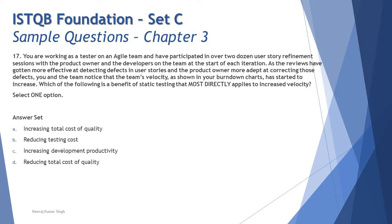The question asks: which of the following is a benefit of testing that most directly applies to increased velocity? You might notice that many terms here — story refinement session, velocity, burn down charts — are not in the foundation syllabus. However, the question is not asking you to define these terms; it's using them as context. The core of this question is about static testing.